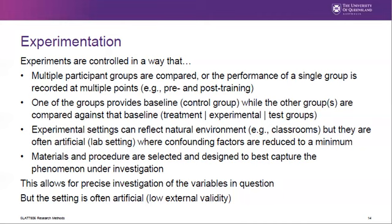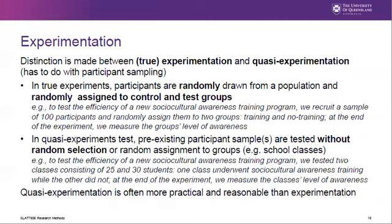One final point in this section is the distinction between true experimentation and quasi-experimentation. This distinction has to do with participant sampling or recruitment. In true experiments, participants are randomly drawn from a wider population and randomly assigned to control and test groups. For instance, to test the efficacy of a new socio-cultural awareness training, we may recruit a sample of 50 participants who work in multicultural environments and randomly assign them to two groups — a control group which does not receive any training, and a test group which receives training. At the end, we measure the group's level of awareness and draw conclusions based on observed differences.